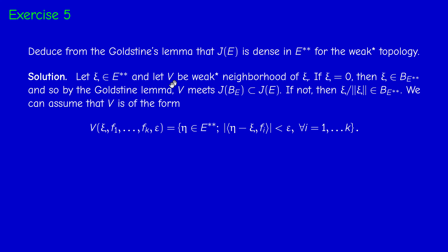From the definition of the weak-star topology, we can assume that this neighborhood is a basic neighborhood — it plays the role of a ball. So it's of the form: there are finitely many elements F1, ..., Fk in the dual and a positive number epsilon. V contains a set of this form, so we have to prove that this set meets J of E.